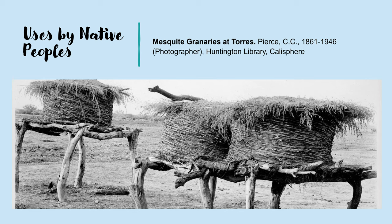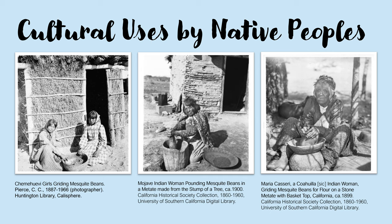The sap was used as a glue to attach arrowheads to arrow shafts and to attach baskets to mortars. The leaves were also used as a medicine to help heal cuts and eye infections. Mesquite pods were collected while green and could be eaten that way or dried and stored for the winter. The entire pod would be crushed and ground into a flour, then mixed with water and baked into a nutrient-rich cake that could be eaten fresh or dried for later. These dried cakes were easily transported, serving as a great food source during seasonal movements and hunting trips.